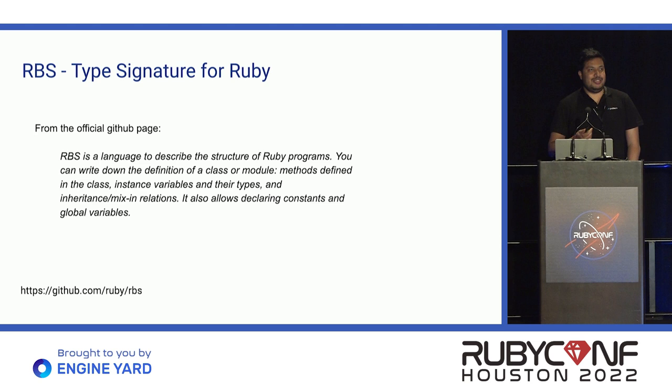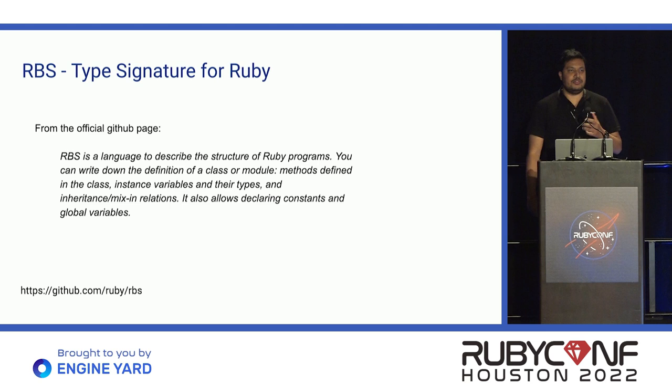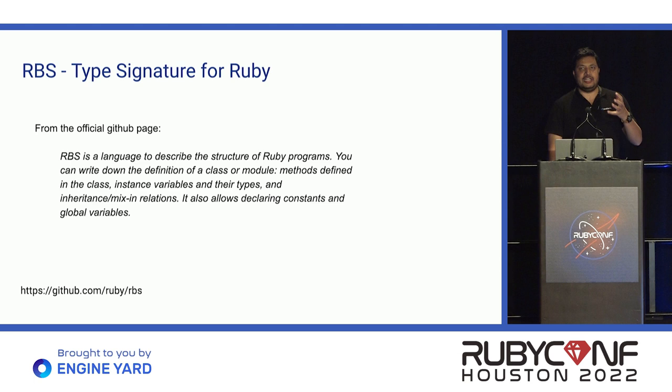RBS stands for Ruby Syntax. It basically provides a way to define the structure of your Ruby code — you're describing how your Ruby code is going to look. You can consider it something like type definition files in JavaScript, the .d.ts extension files we generally use. It provides the structure, but RBS does not check the type of the Ruby code. It only provides the programming interface to define the structure of your Ruby code.